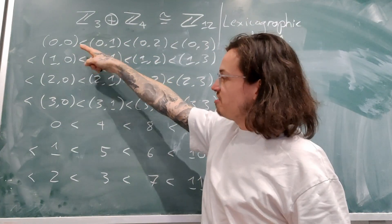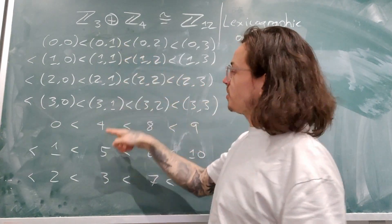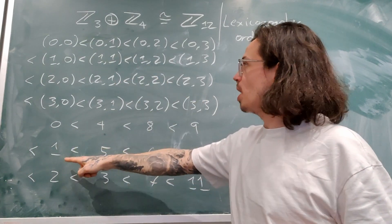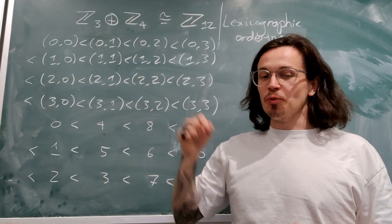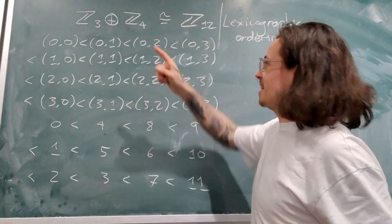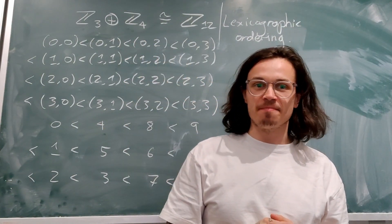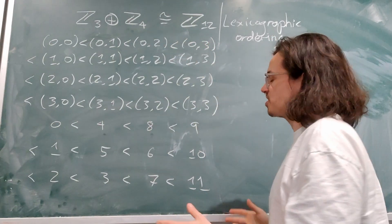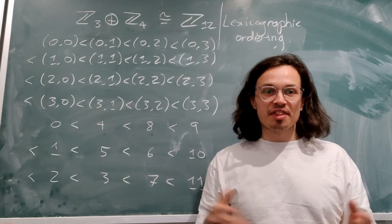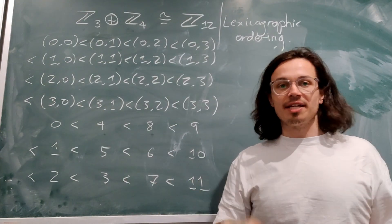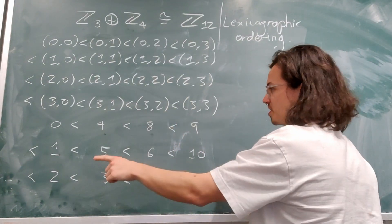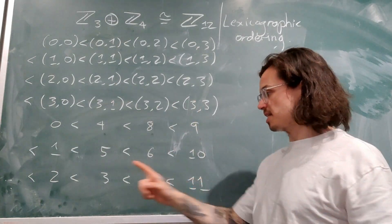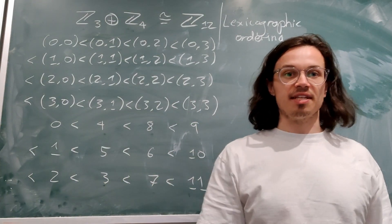So let's have a look at this, because it's a little bit interesting. 0,0 corresponds to the number 0. 0,1 corresponds to the number 4. To see if that's true, remember that 1,1 corresponds to the number 1, and 0,1 is equal to 1,1 added to itself 4 times. And look at this order that we end up with. This is the thing that I want to be a little bit weird, which we can then understand musically. So this order is 0<4<8<9<1<5<6<10<2<3<7<11. How are we going to understand this?